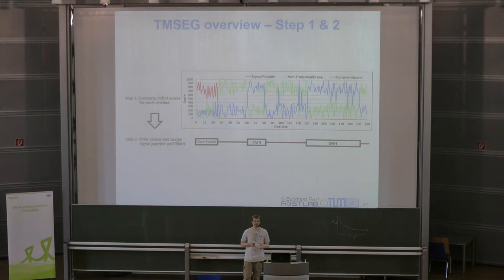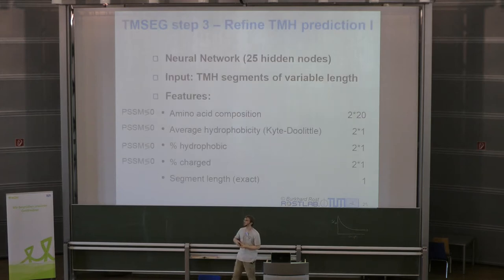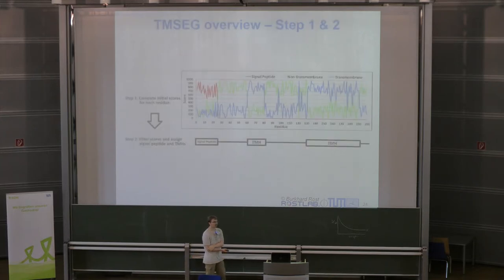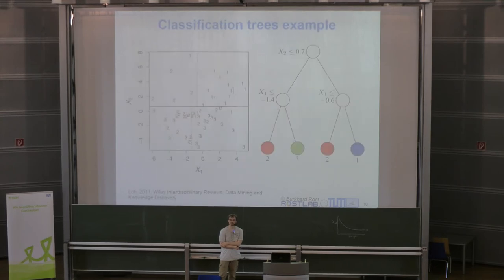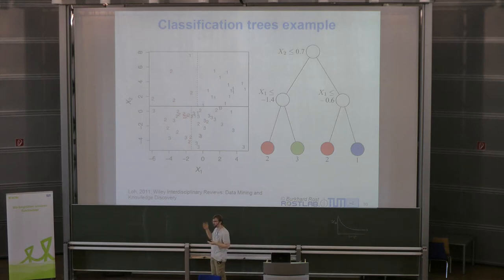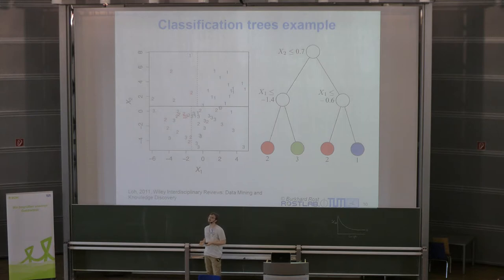The third step refines the first prediction. Regarding how probabilities are obtained from the random forest: at each leaf node, the distribution of training instances gives a class probability rather than a hard 0/1 prediction. In the random forest, the average of all tree probabilities gives the final probability, not just a binary prediction. After the first two steps we're certain which proteins are transmembrane. The third step uses a neural network operating on segments rather than residues.